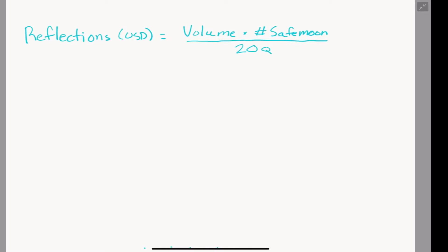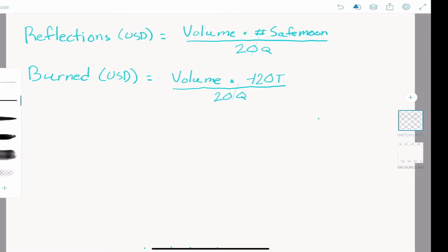The tokens that are burned are simply the burn wallet's share of these reflections. To calculate how much of a given volume is burned, we use the same equation. By replacing reflections with burned, we can see that burned equals volume times the number of coins in the burn wallet divided by 20 quadrillion.